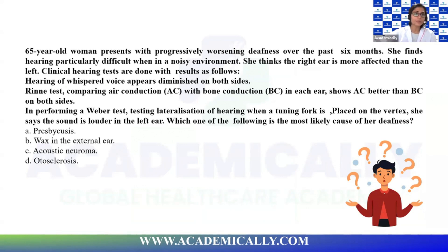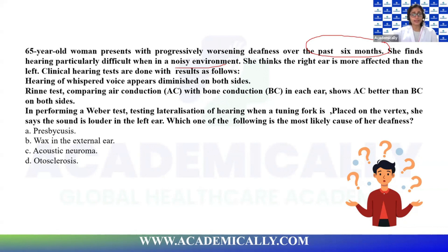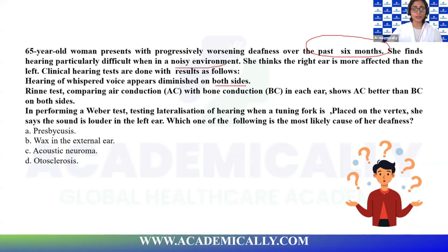First question: A 65-year-old woman presents with progressive worsening deafness over the past six months. She finds hearing particularly difficult in a noisy environment and thinks the right ear is more affected. Hearing tests show that whispered voice appears diminished on both sides. Rinne's test shows air conduction is better than bone conduction on both sides.